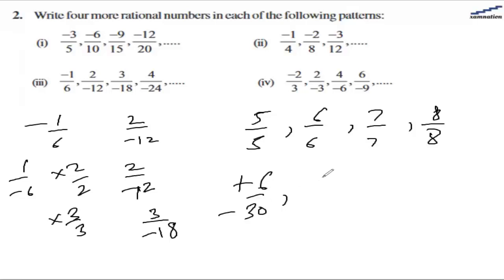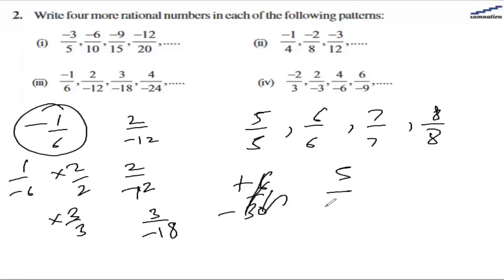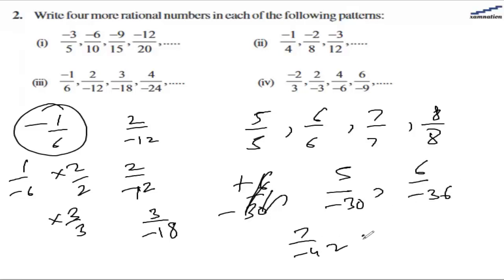Continuing in part three, the four new rational numbers are: 5/(-30), 6/(-36), 7/(-42), and 8/(-48). So these are the 4 rational numbers which will come in this series.